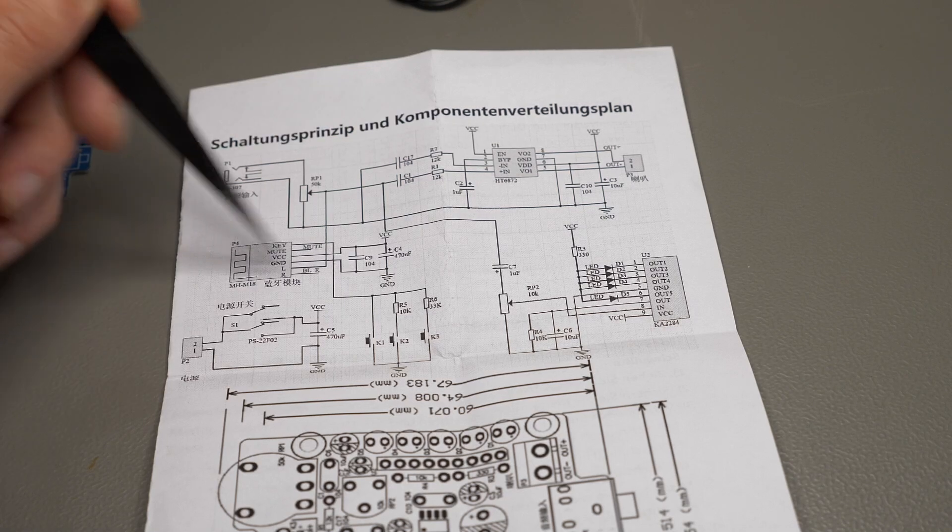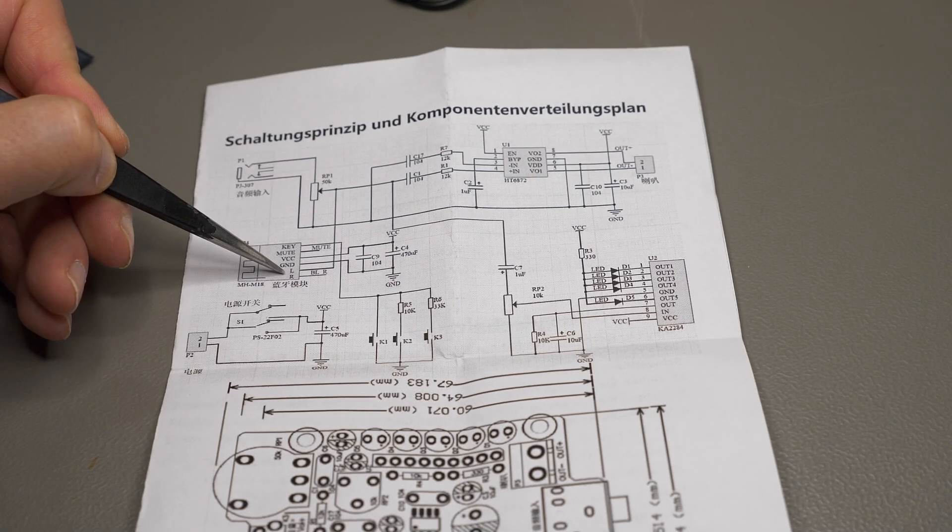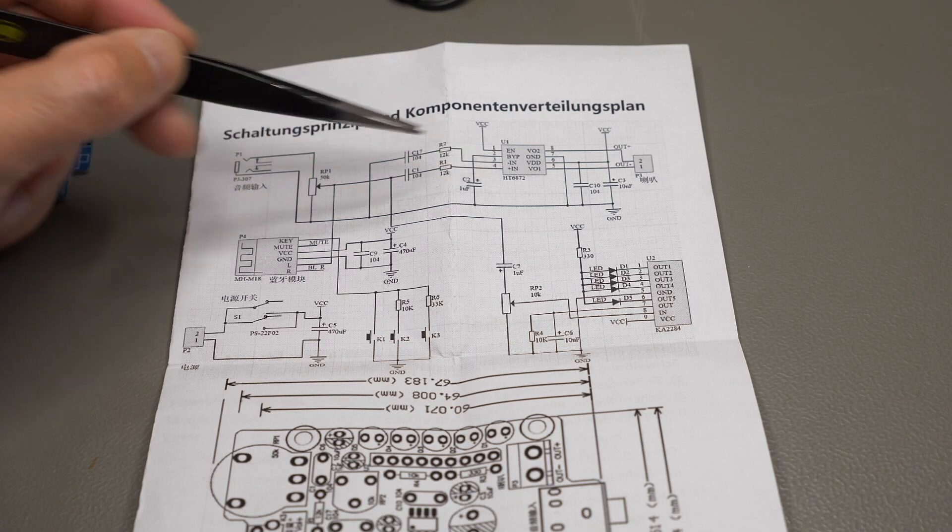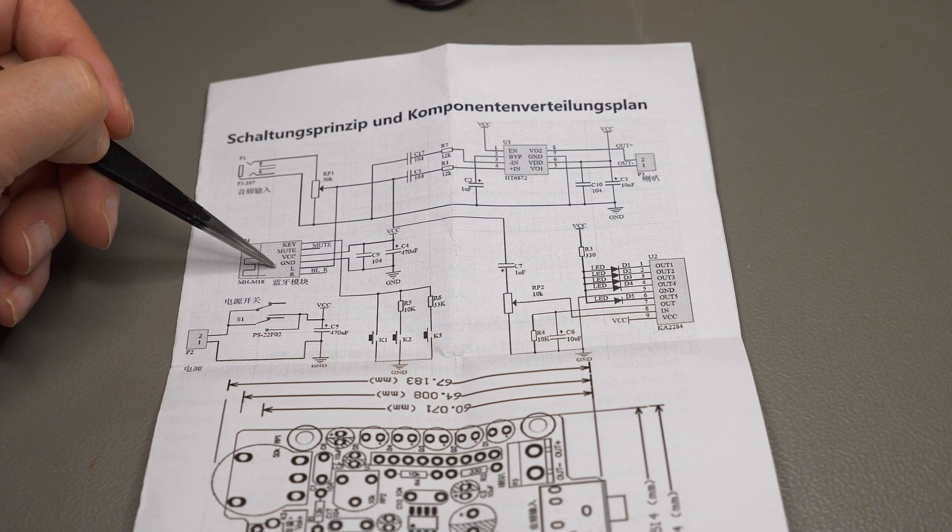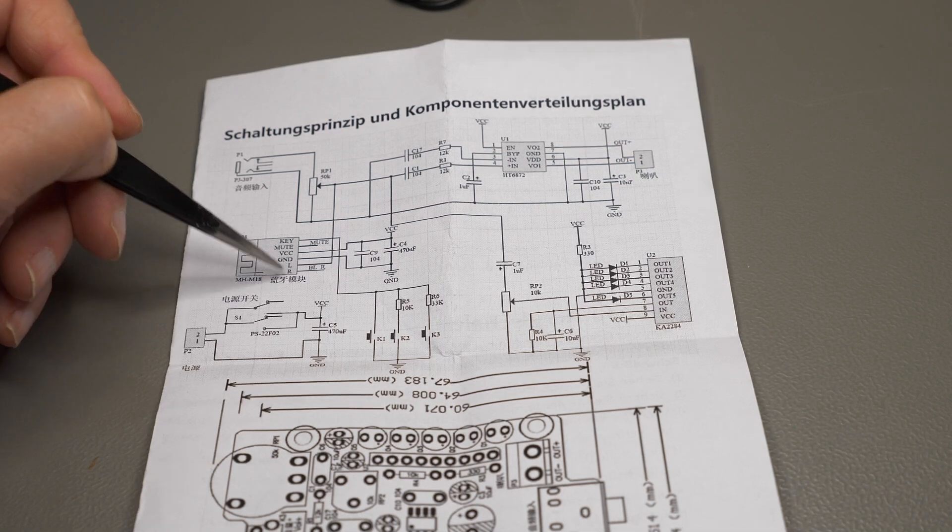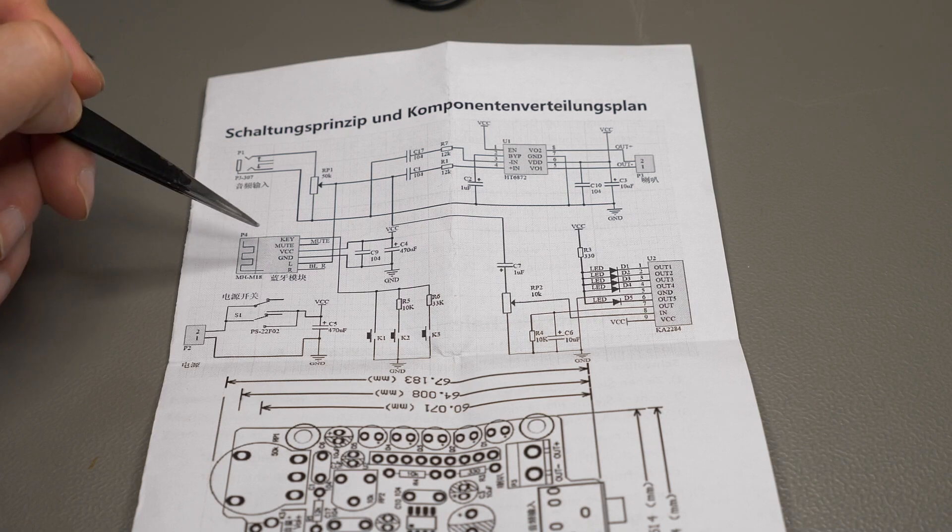Yeah. The second part of the schematic is obviously the Bluetooth connection, where they've only connected the left output. Again, mono to IN plus. So it would be interesting to see if with some stereo source you get the right channel or if they've configured this thing correctly to be in mono mode.